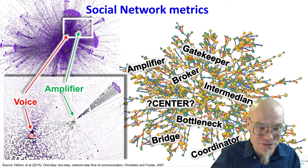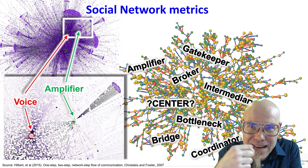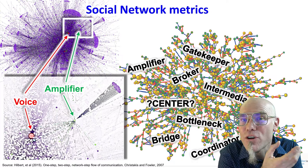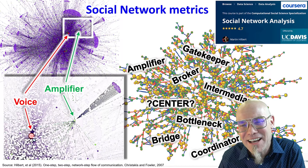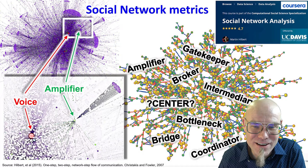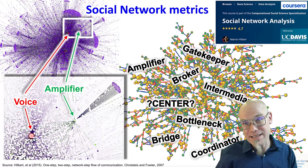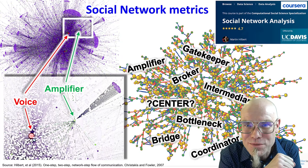You could also ask: what is the node in the network that has to be passed through most often when everybody wants to connect to everybody else? That node is a critical bottleneck or intermediary. There are differences between these concepts, and if you want to learn more, I have an entire course on social network analysis available on Coursera as part of the Computational Social Science specialization at the University of California. It's about three to four hours of lectures covering how to calculate these kinds of measures.